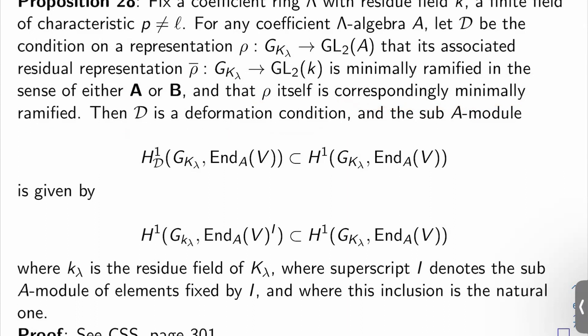Then D is a deformation condition, thank goodness. And the sub A module H^1 sub D of G_K_lambda and AB sitting inside the full H^1 of G_K lambda and AB corresponding to the deformation ring that we'll have in this sense if we have absolute irreducibility, for example, is none other than H^1 of G sub little case k_lambda of N_AB to the I inside the full H^1 of G_K_lambda and AB.